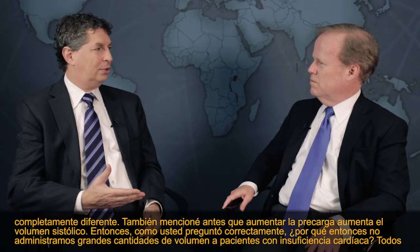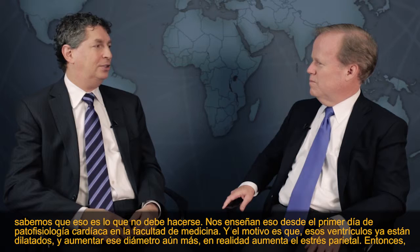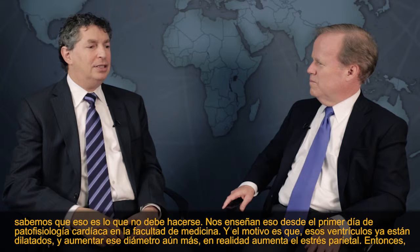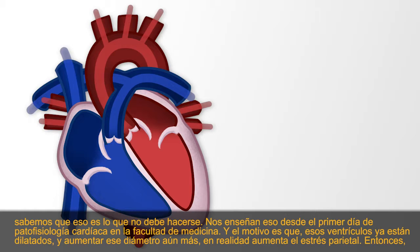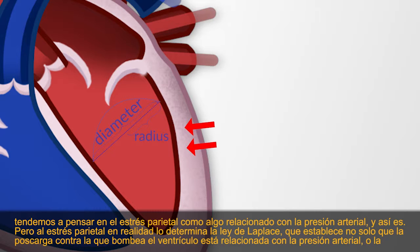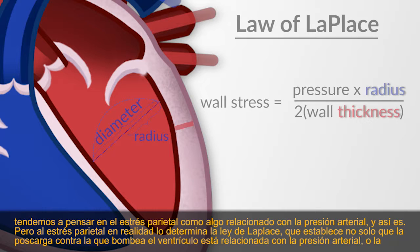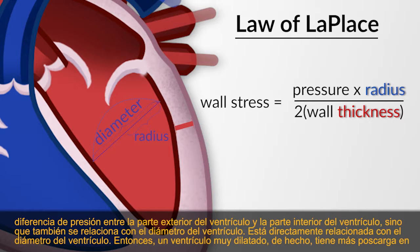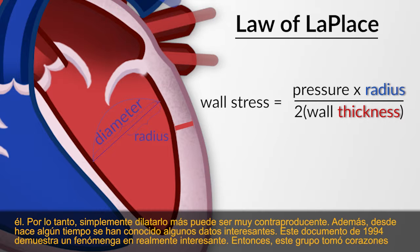Increasing preload increases stroke volume, so why not just give volume to heart failure patients? We know that's wrong. These ventricles are already dilated, and increasing diameter further increases wall stress. By the law of Laplace, wall stress is related not only to blood pressure but also directly to ventricular diameter — so a very dilated ventricle has more afterload. Simply dilating it more can be very counterproductive.